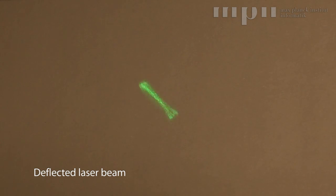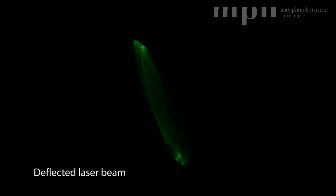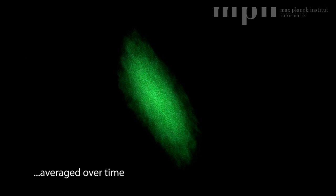This Lissajous figure is the deflection of a laser beam from the moving surface shown before. Averaging over a long exposure time results in an elliptical Gaussian profile as used in some of the established BRDF models.